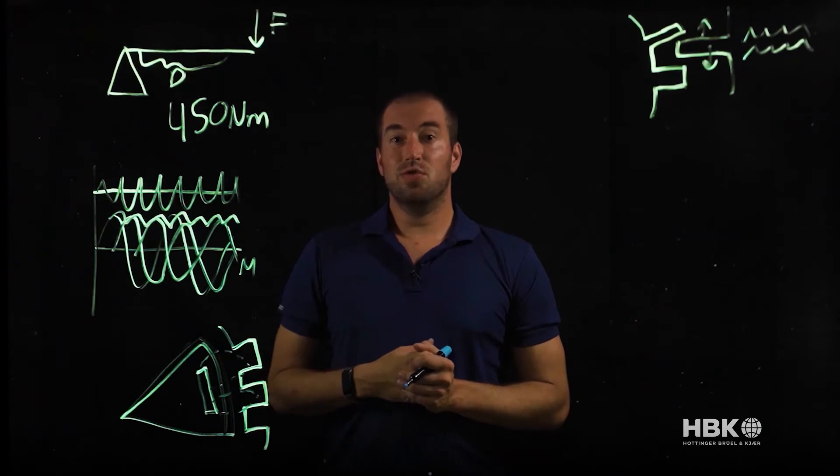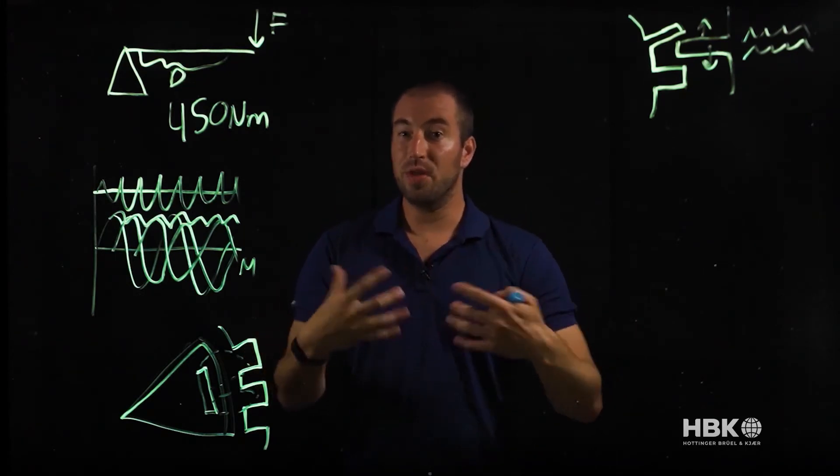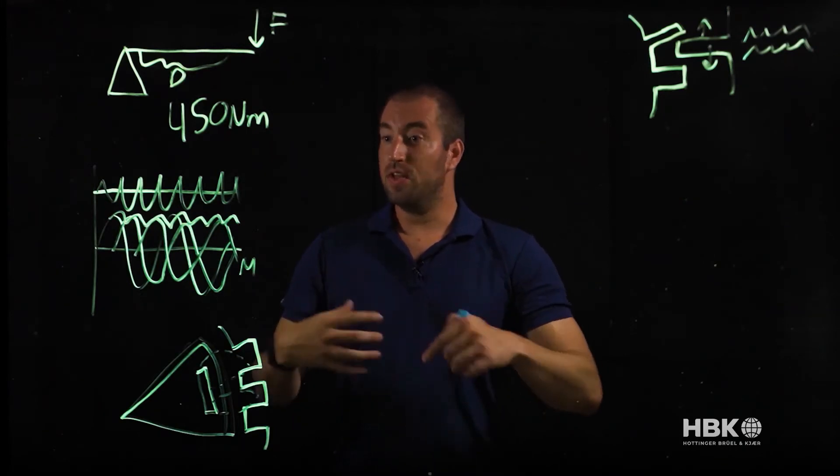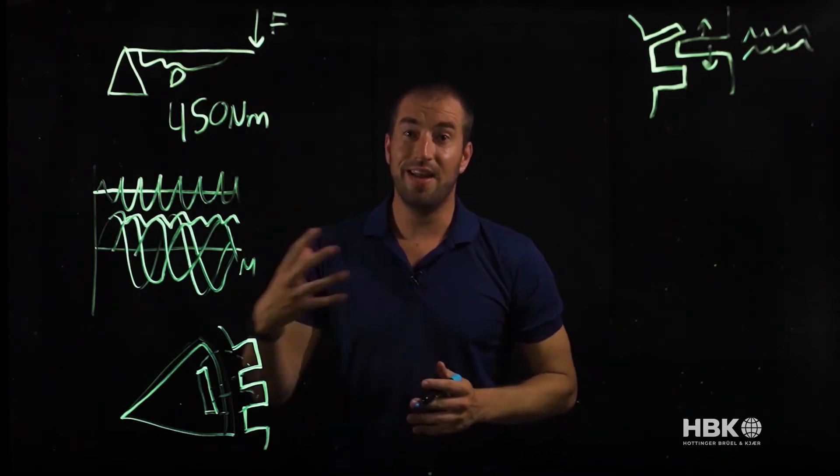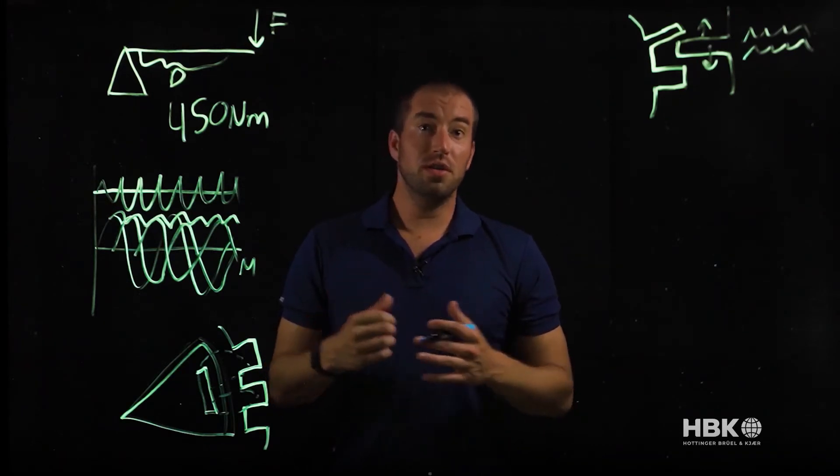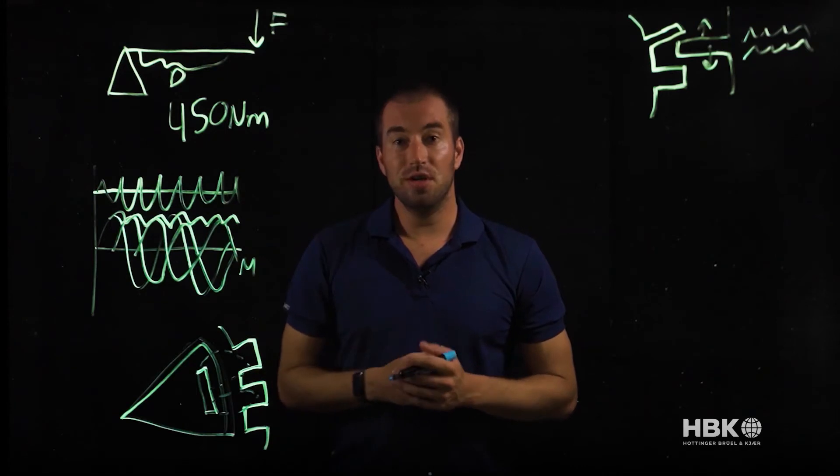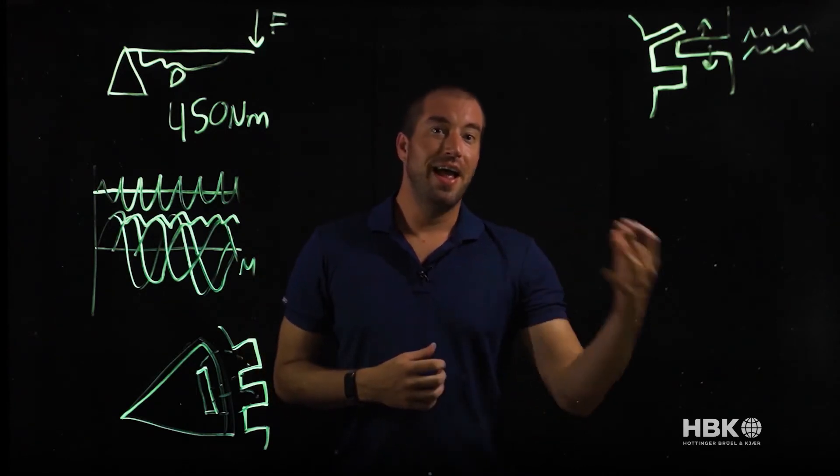Torque ripple also affects the control of the motor. When we're controlling a motor, we need to know position and torque so that we can keep the machine spinning. If that torque has a high frequency and high amplitude, it becomes difficult to control. Fortunately, we have a wide variety of ways of reducing torque ripple through machine control, machine excitation, and construction.